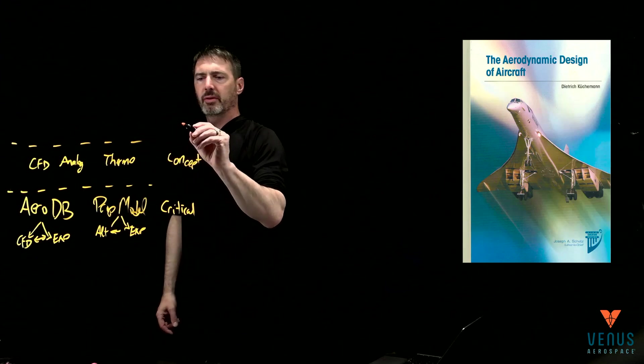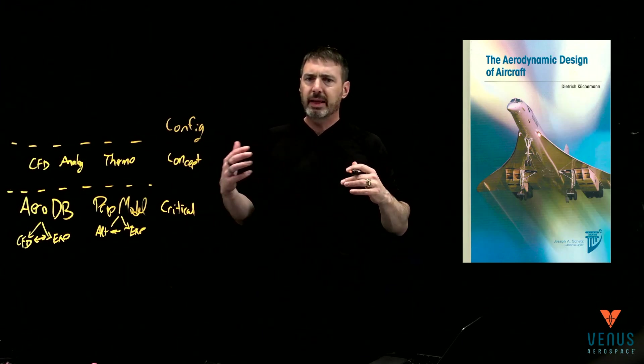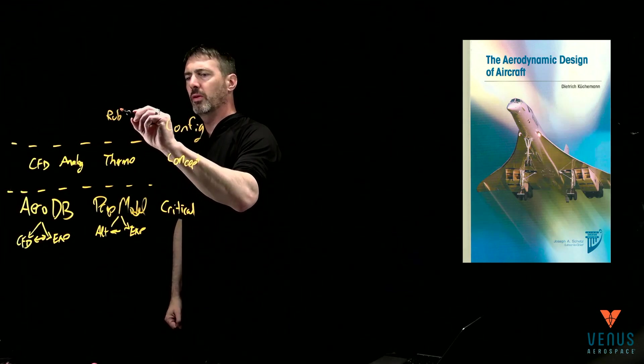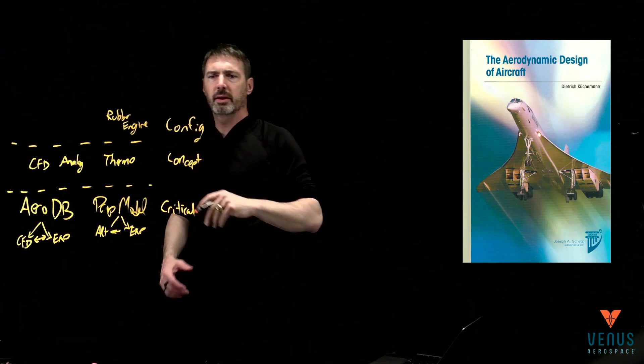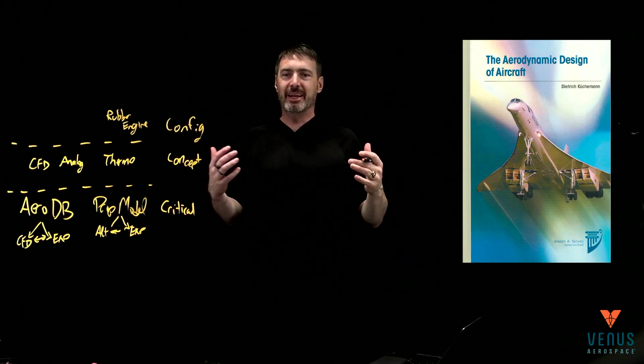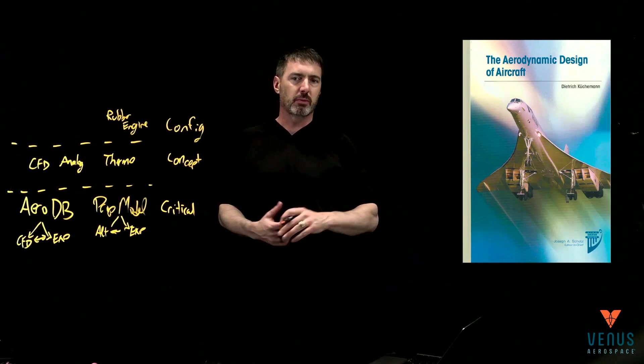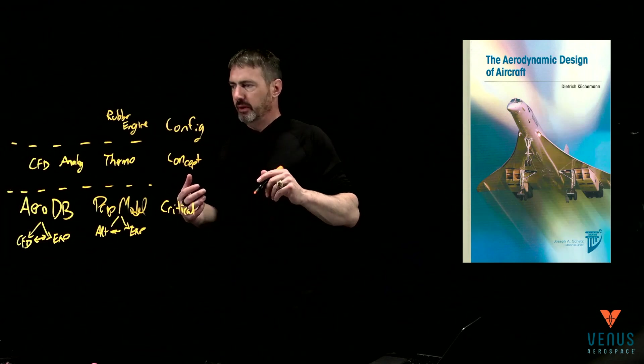But then above this, there's a configuration level where you're letting everything kind of float. On the engine side, this is what you call a rubber engine, where it's a thing that's generating this magical thrust. You might have only ISP or thrust to weight curves on it.